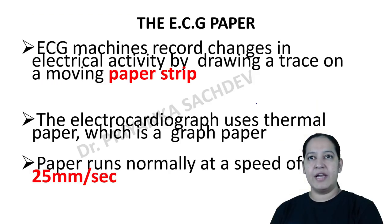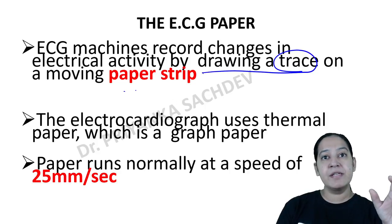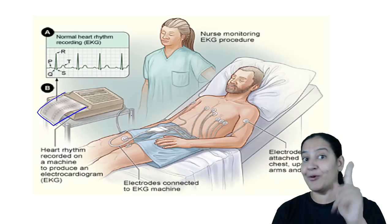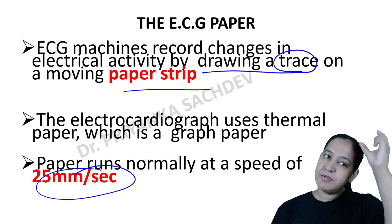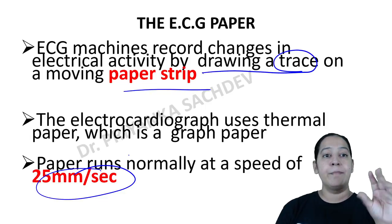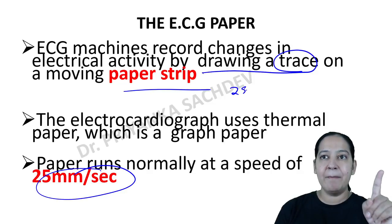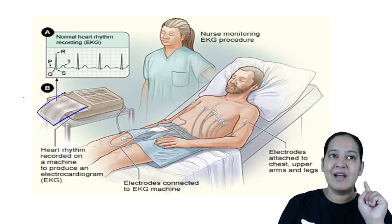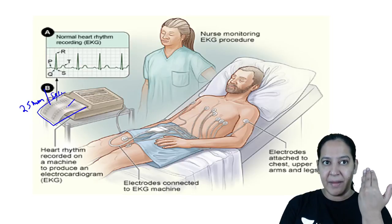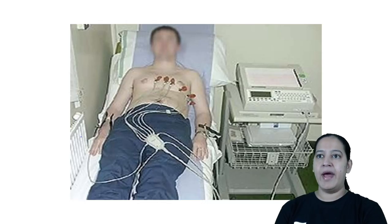About the ECG paper: whenever the ECG machine records changes by drawing a trace on paper, the paper is moving out of the machine. The speed at which the paper comes out is 25 mm per second — this is a very important MCQ point. Sometimes we decrease or increase the speed depending on whether the patient has bradycardia or tachycardia, but the standard speed is 25 mm per second. In one second, 25 mm of paper comes out of the machine.